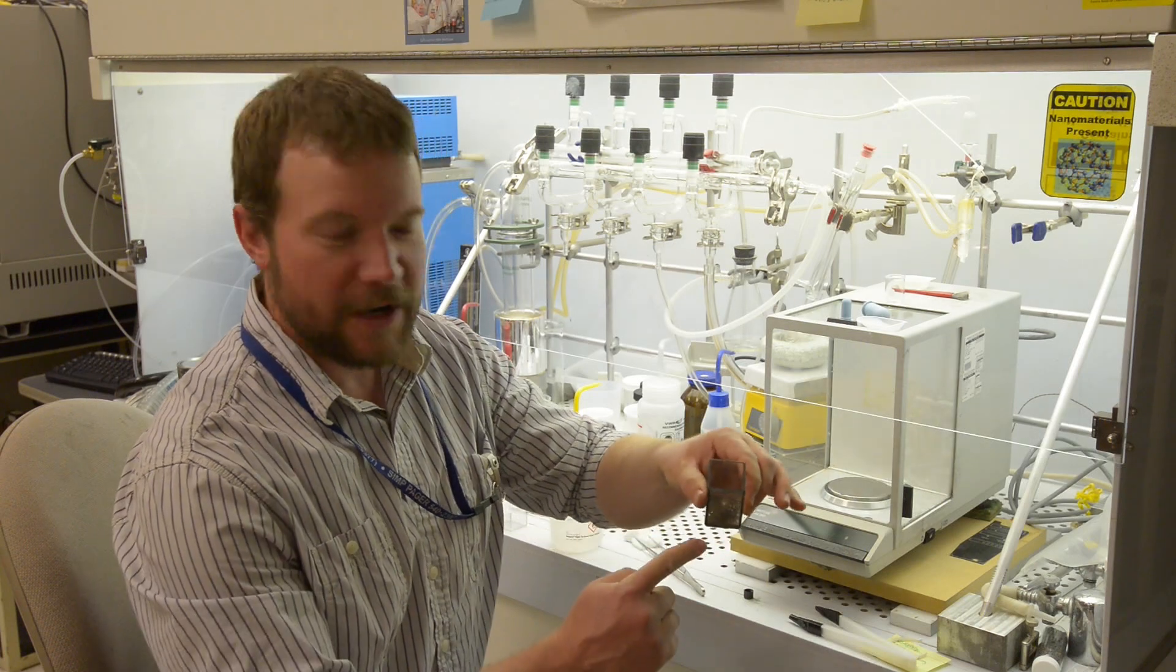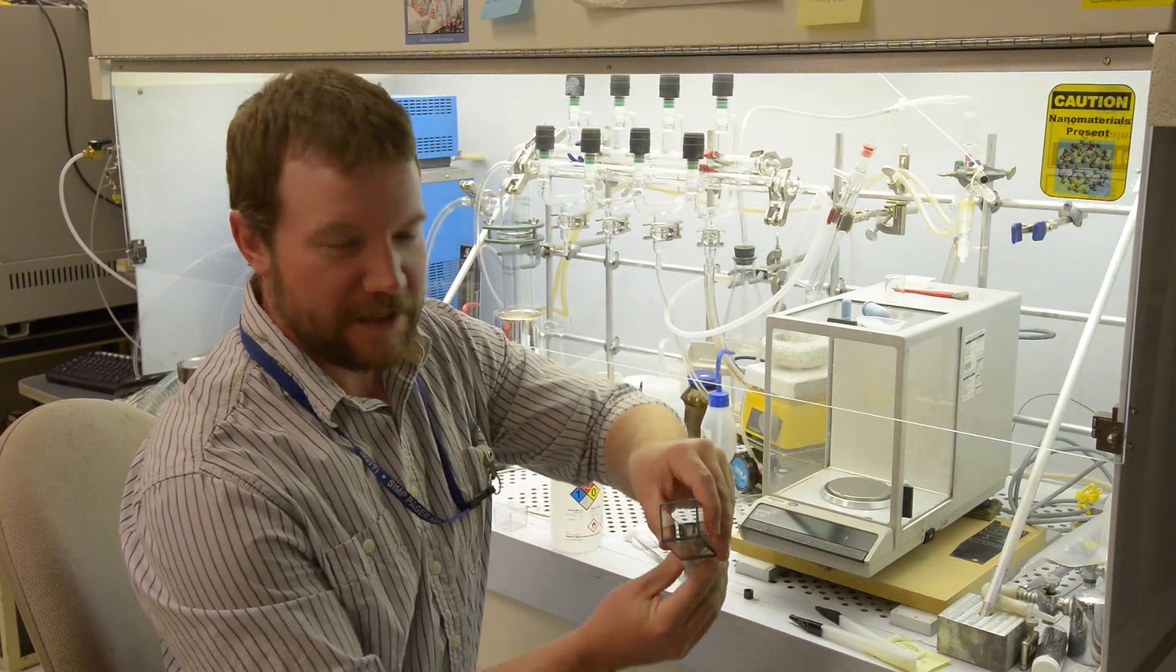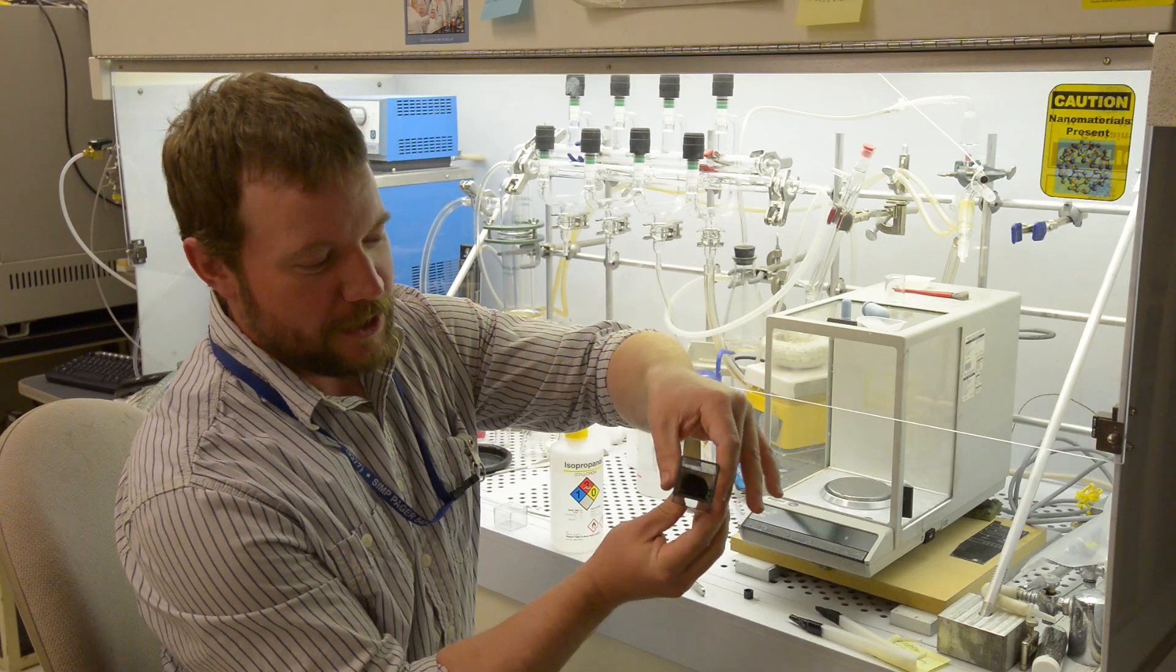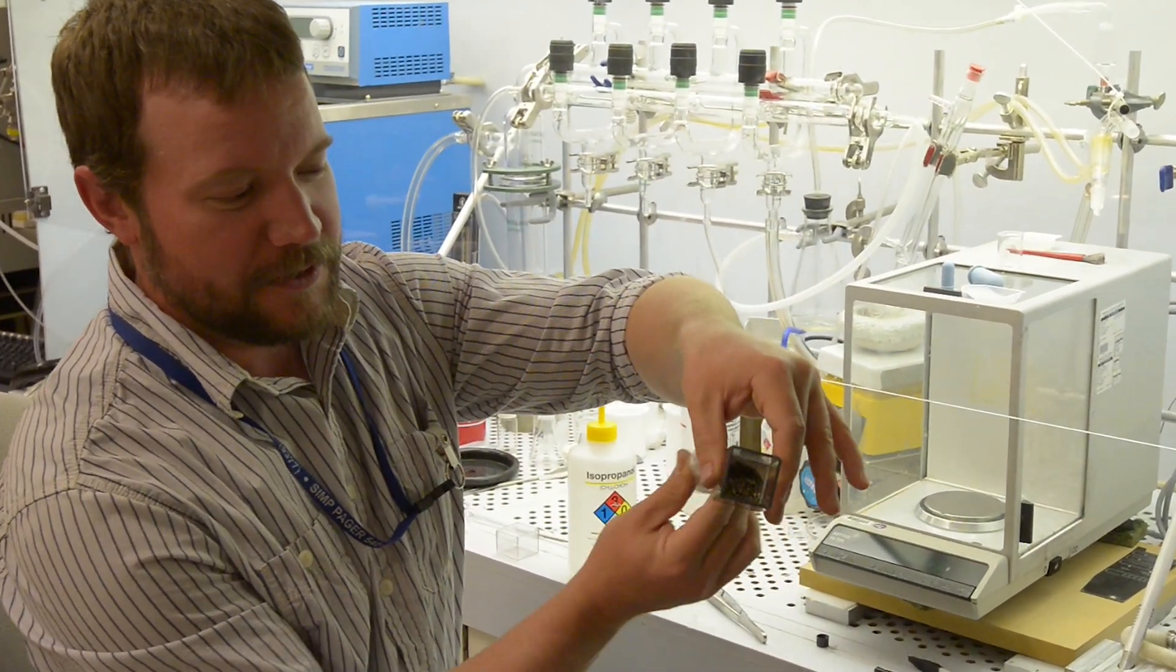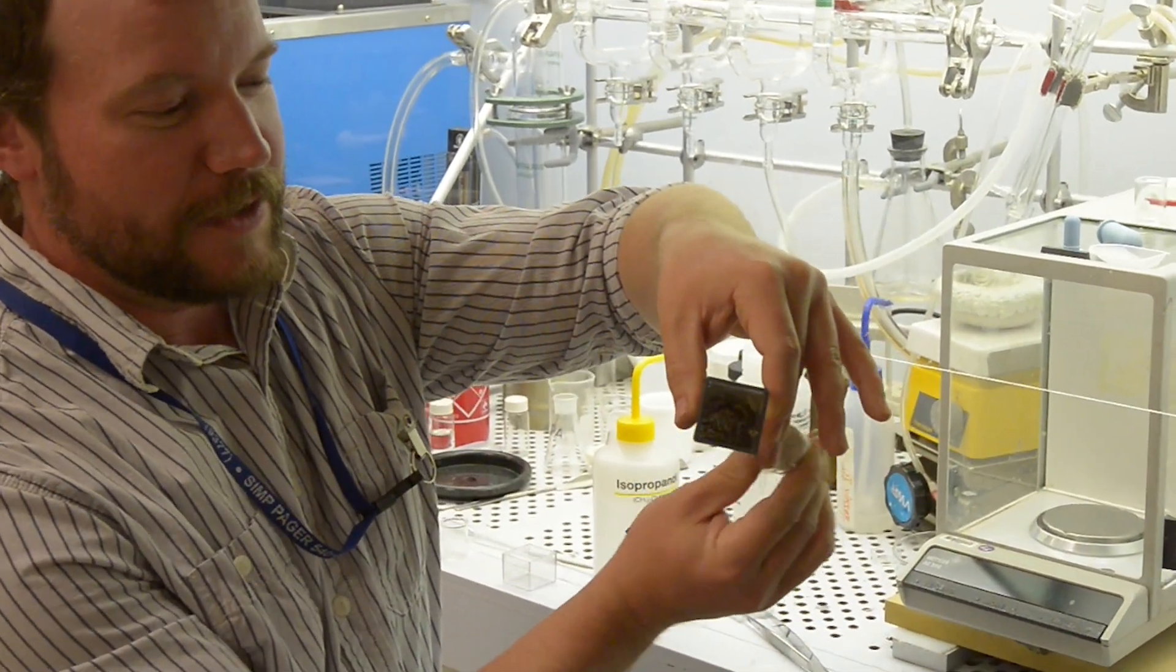Here in this roughly one-inch square glass cuvette, we have the magnetic platelets that we mentioned earlier. As you can see using this permanent magnet, they're rather responsive. You can see how they shift around inside the cell as we move the magnet.